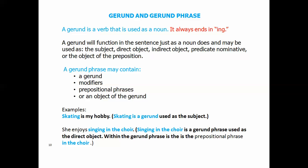The second type of verbal phrase is called a gerund. A gerund is a verb that is used as a noun, and it always ends in ing, so it's pretty easy to find it. A gerund will function in the sentence just as a noun does, and it may be used as the subject, the direct object, the indirect object, the predicate nominative, or the object of the preposition. A gerund phrase may contain a gerund, modifiers, prepositional phrases, or an object of the gerund.